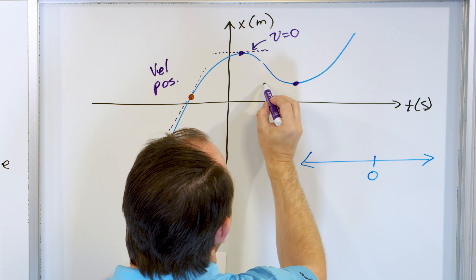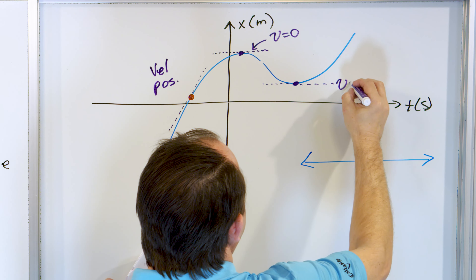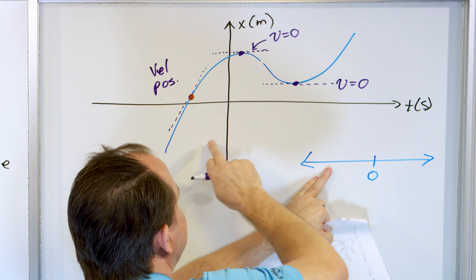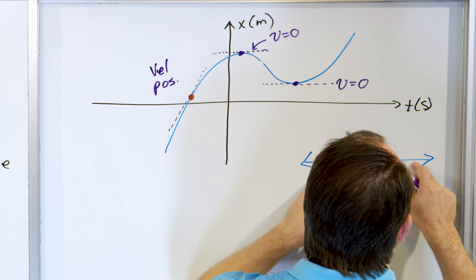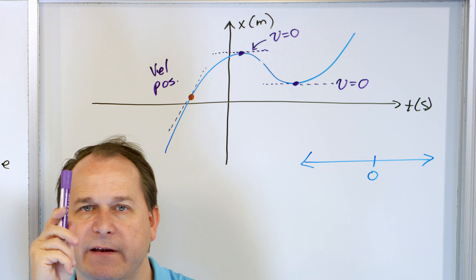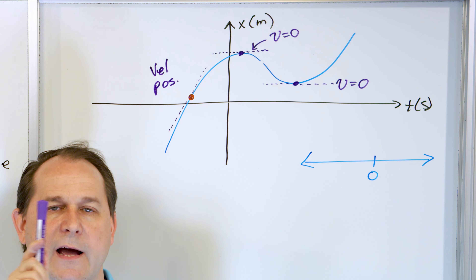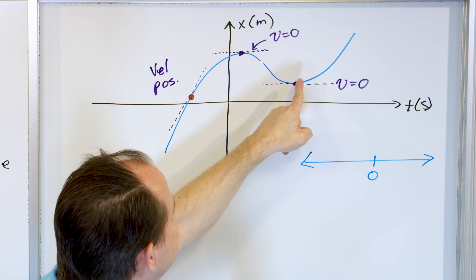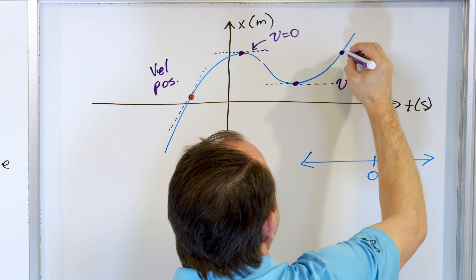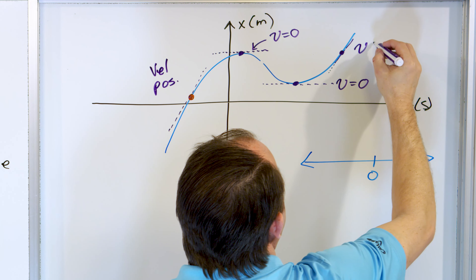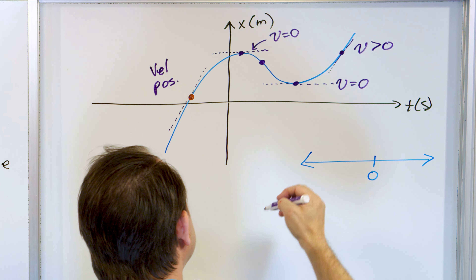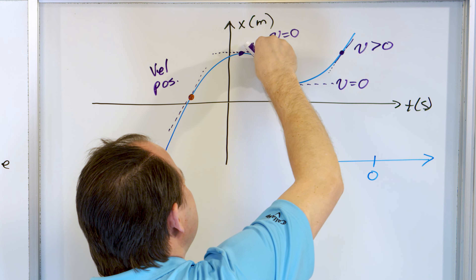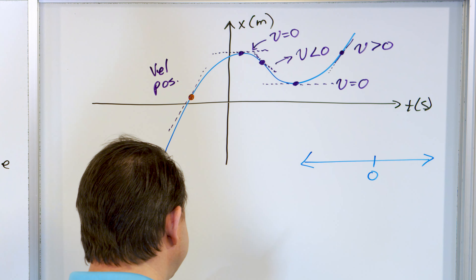The same thing is going on at the bottom — the tangent line is also flat, so the velocity is zero again. The particle is starting to the left of zero, going positive, then it has to turn around. As it turns around, its velocity becomes zero for just a moment — you must stop momentarily to come back. At that moment of stopping, the velocity is zero. These are the turning points. Where the slope is going down, the slope of the tangent line is negative, so the velocity there is less than zero — negative velocity.